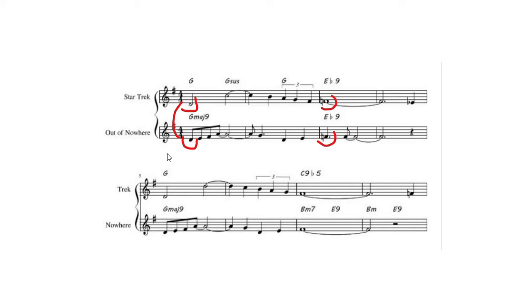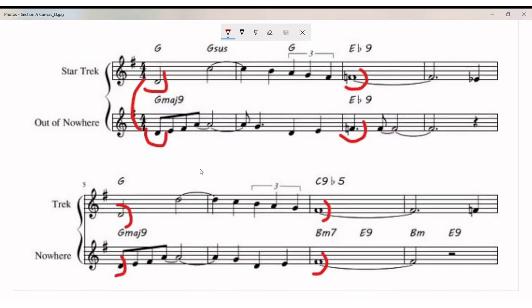But it doesn't stop there. Let's go on to measure five — basically a recap of that same melody. They both again start on the D, and they end on the same tone. Only this time, the ending tone is an F sharp, which is in the key signature. Star Trek's second phrase ends on that F sharp, and "Out of Nowhere" does too. The difference is that F natural in measure three seems to want to pull back down to the re-announcement of the theme starting on G major, whereas ending on the F sharp in measure seven seems to propel us forward into what's to come next.